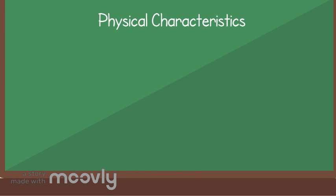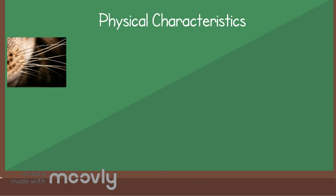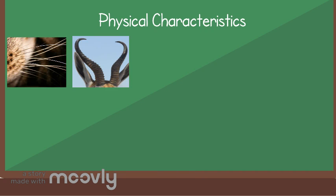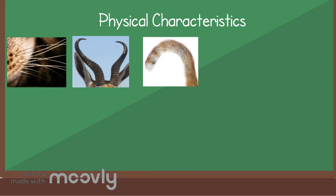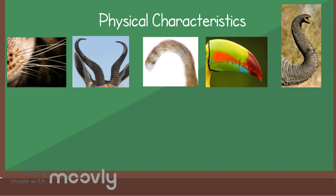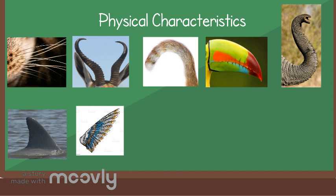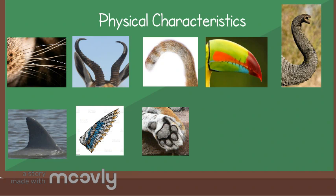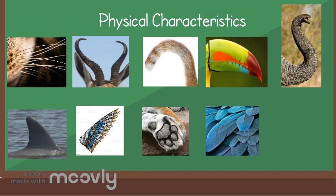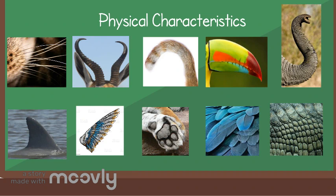Let's see some physical characteristics. Animals have whiskers, horn, tail, beak, trunk, fin, wing, paw, feathers, and scales.